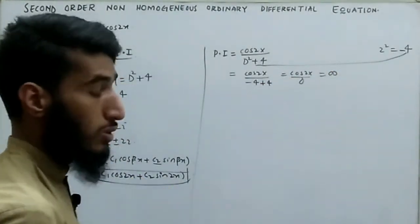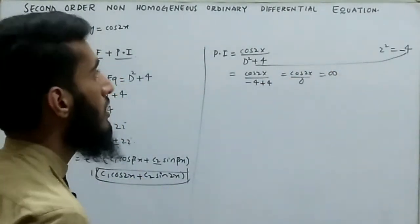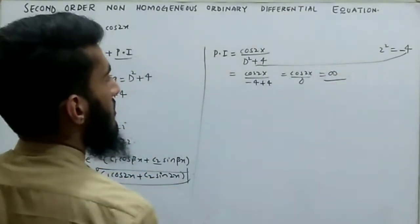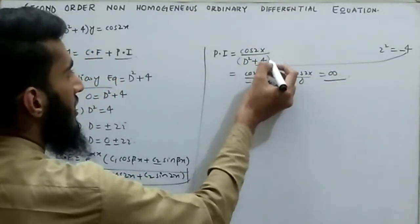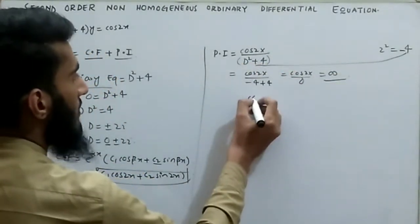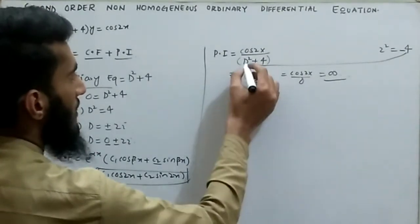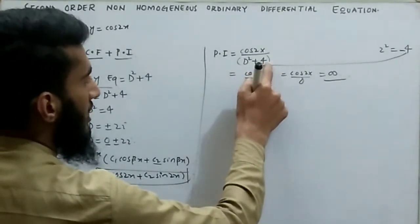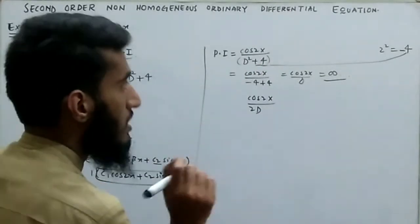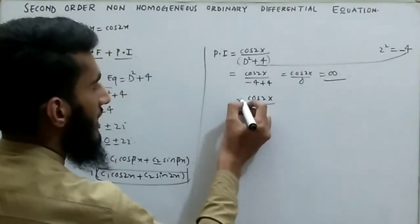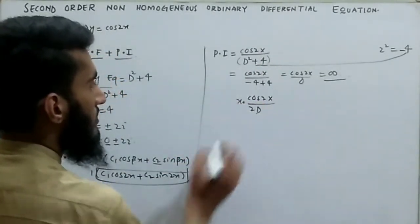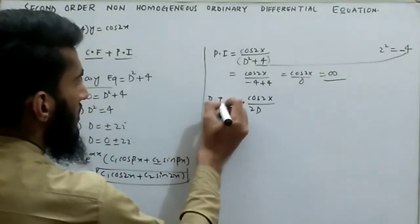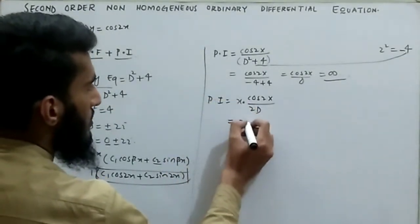When the denominator becomes 0 (undefined), we take the derivative of the denominator. The derivative of D² + 4 with respect to D is 2D; the derivative of the constant 4 is 0. We also multiply by an extra x, so the particular integral becomes x divided by 2D, times cos(2x).